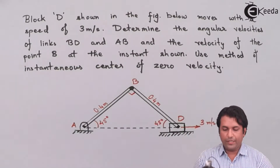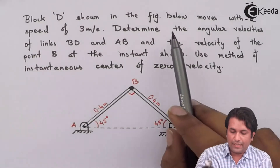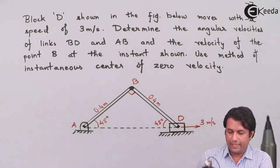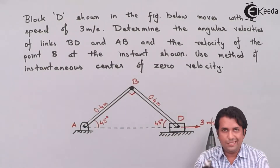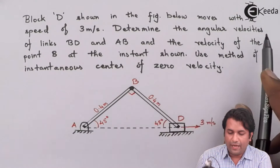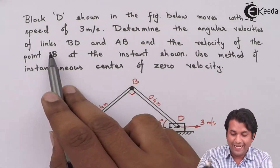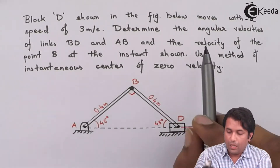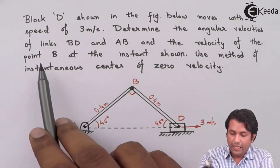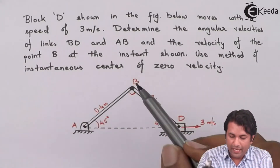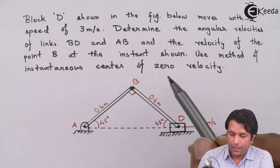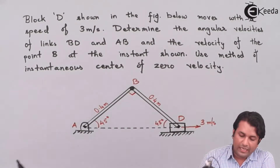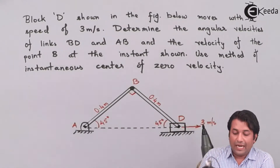In this question, block D moves with a speed of 3 meters per second towards right. We need to determine the angular velocity of link BD, link AB, and the velocity of point B at this instant, using the method of ICR.